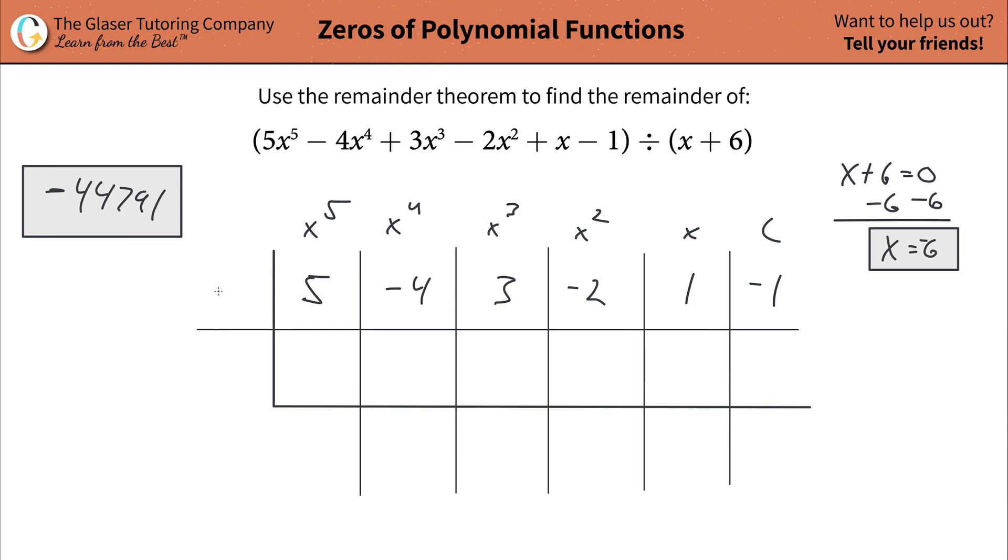And doesn't that process seem similar to what we did? Now all you're going to do is take the 5. You've got to drop this first term straight down. So you're going to put a 5. Now you've just got to follow a simple series of steps here. There we go.